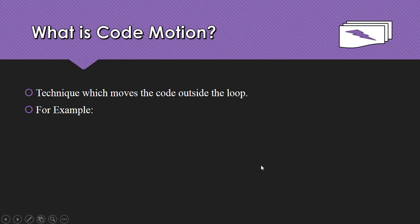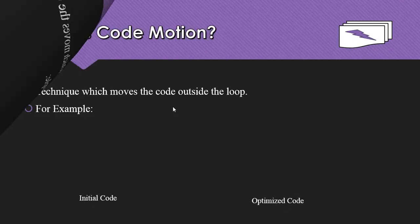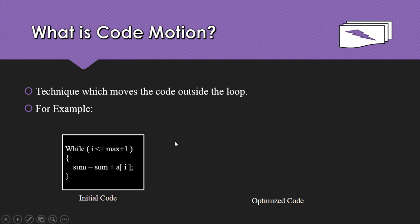What is code motion? Code motion is a technique which moves the code outside of the loop. In code motion, we are moving the code outside of the loop. Let's see with an example — this is the initial code where you can see we use a while loop.